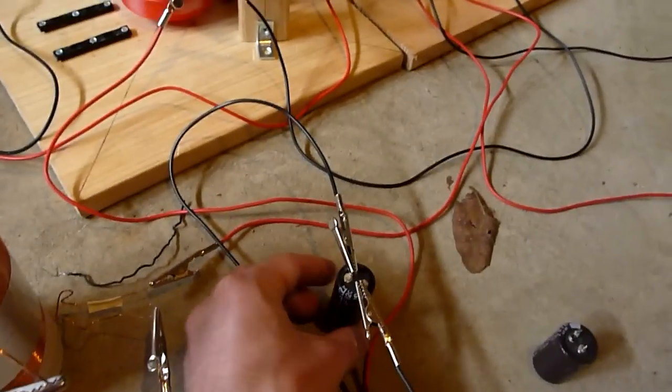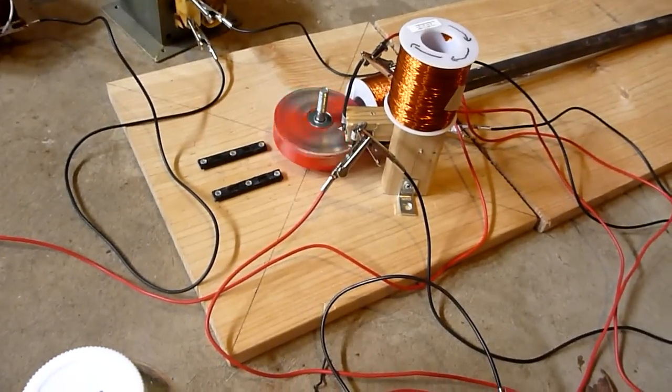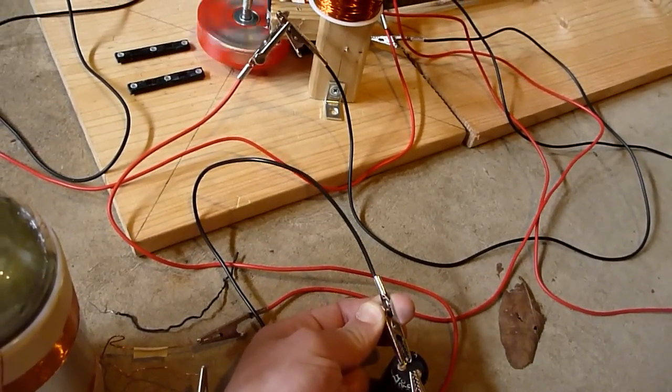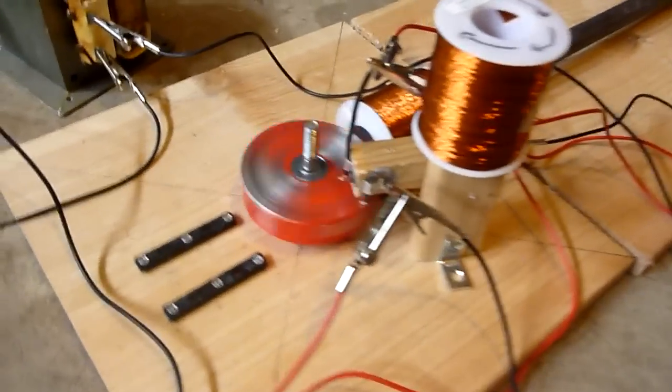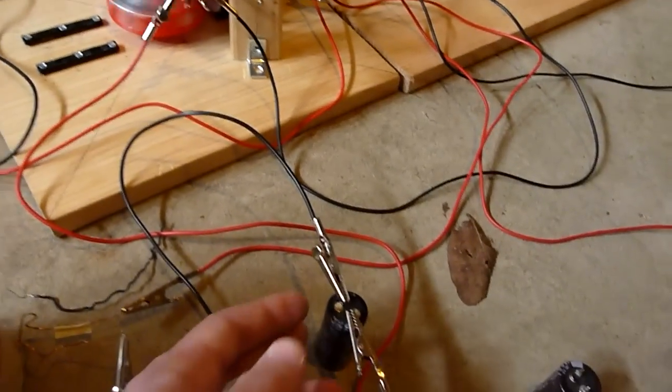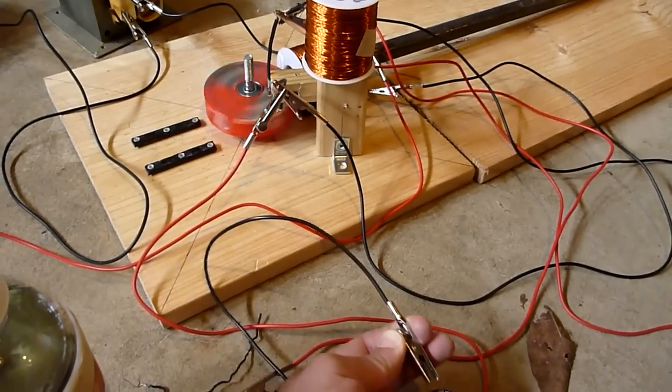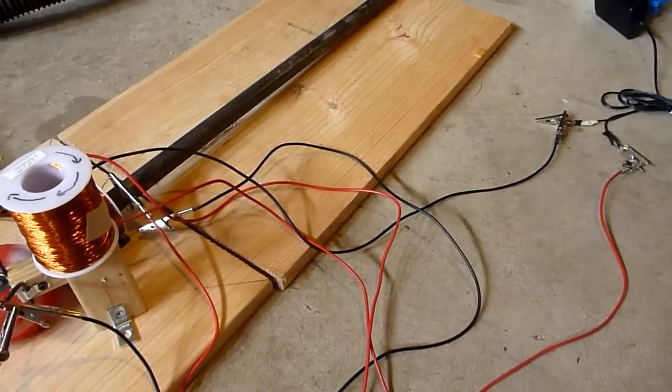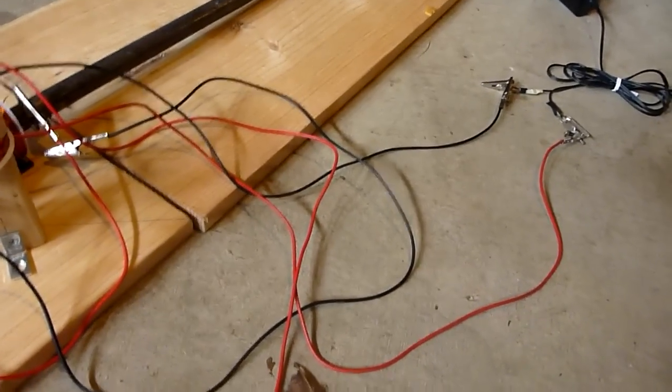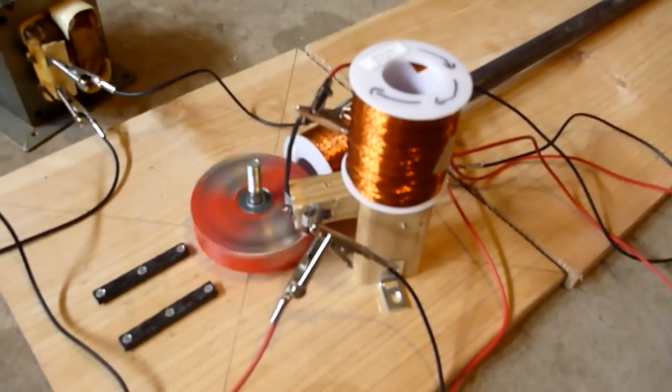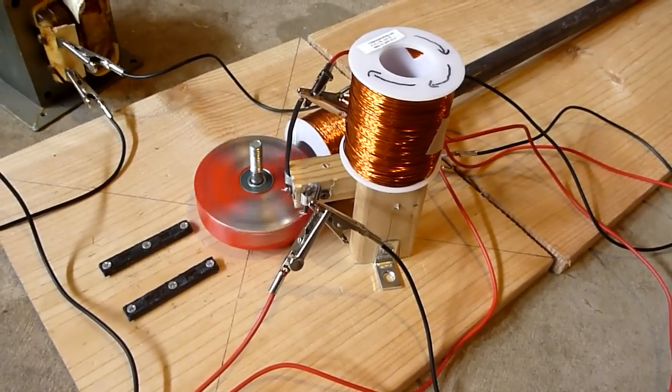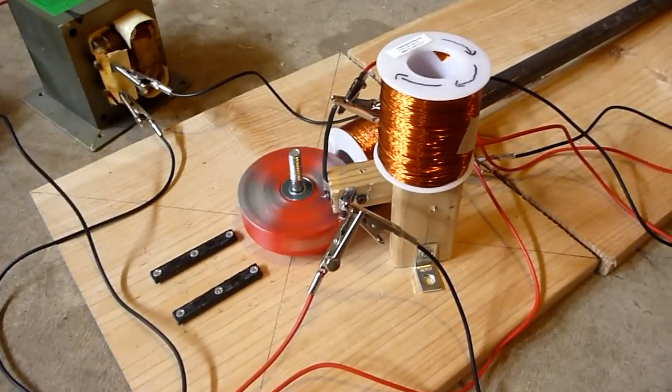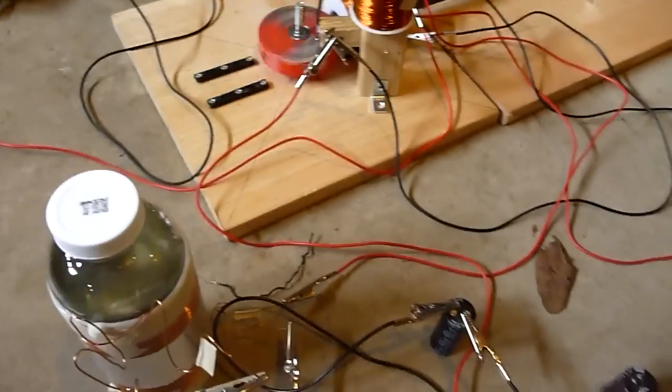Notice what happens when I disconnect the capacitor from the circuit. As you can see it slows down drastically. Watch what happens when I reconnect it. Notice what happens when I disconnect it faster. When I reconnect it. For some reason adding the capacitor to the circuit speeds up the rotor. I find that very interesting and I hope that you do as well.